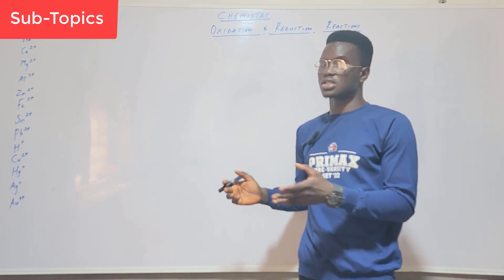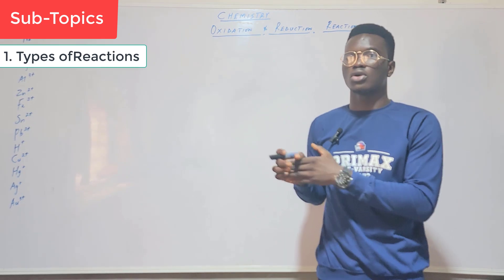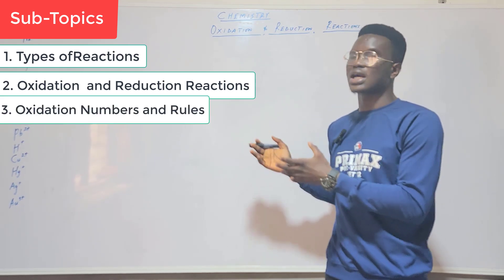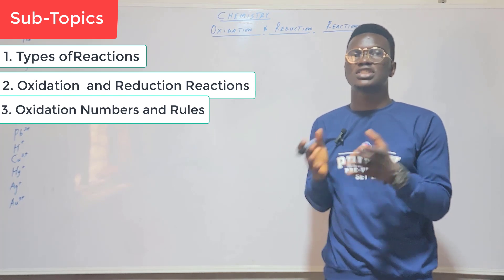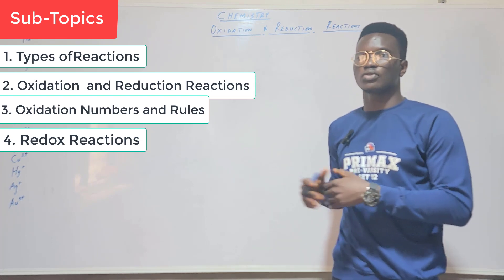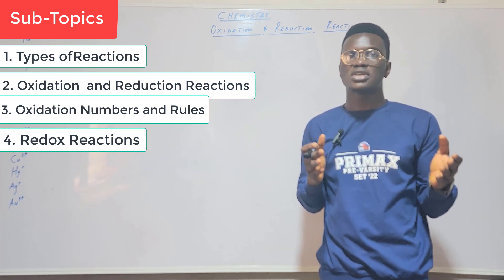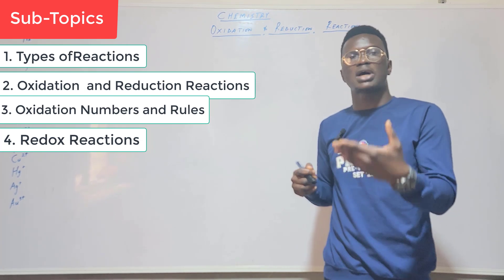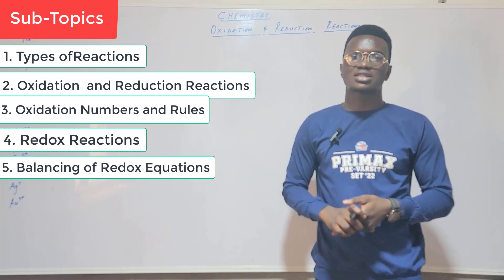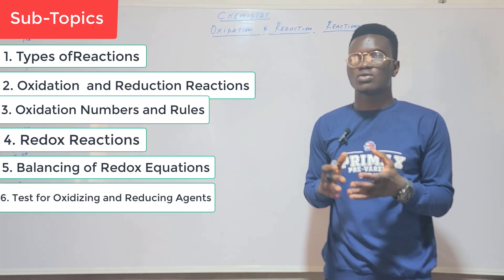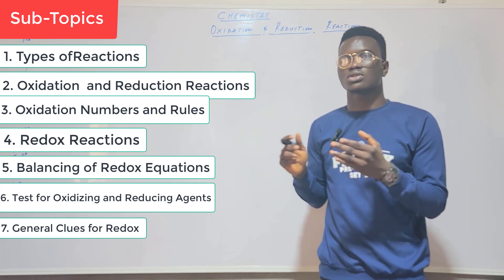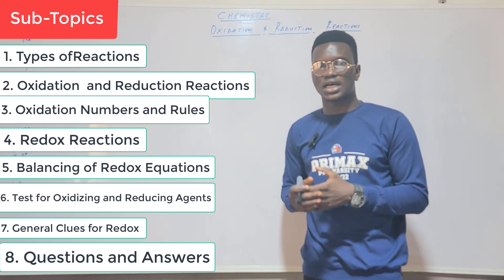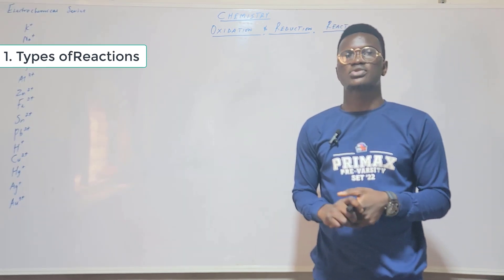In this class, we look at different types of reactions, focusing more on oxidation and reduction reactions — their definitions and examples. We'll also look at oxidation numbers, how to determine them for different elements, and then redox reactions. We'll learn to balance redox equations in acidic or basic medium, just like balancing equations in stoichiometry. Please pay full attention.